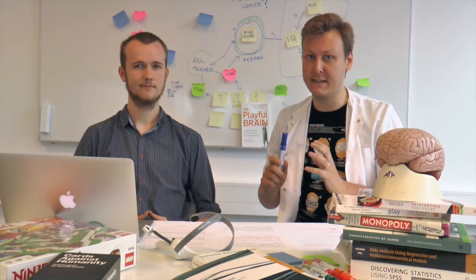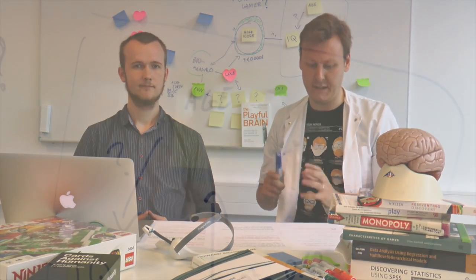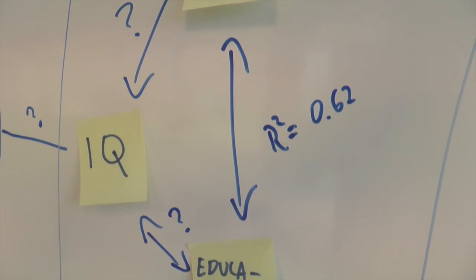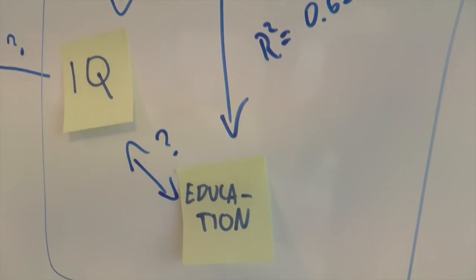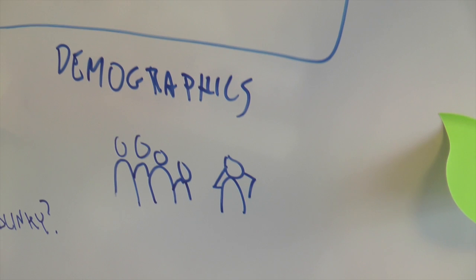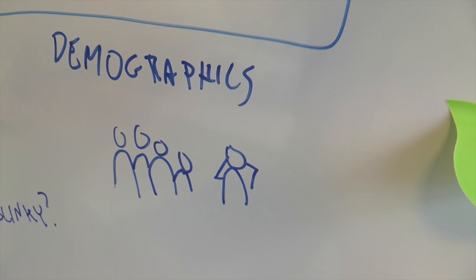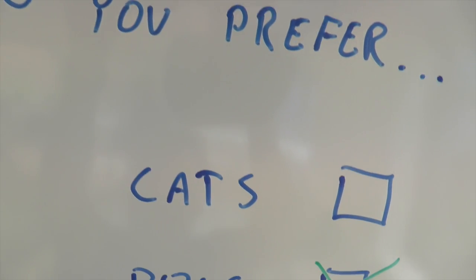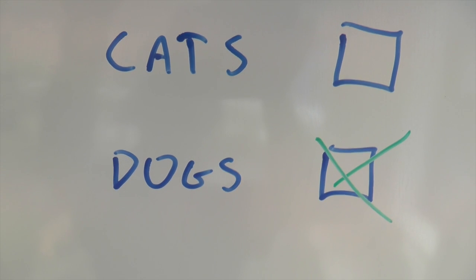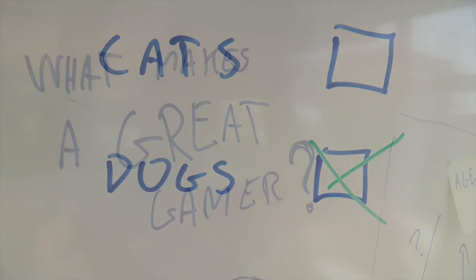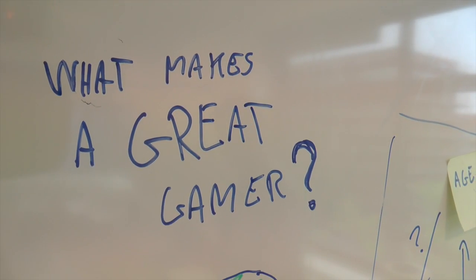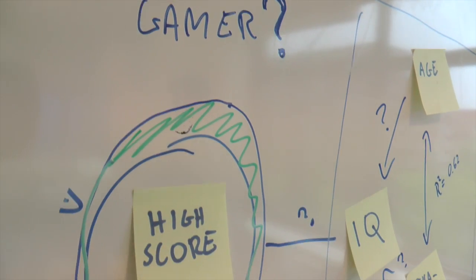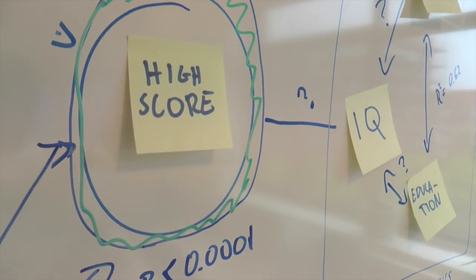Psychologists use statistical tests to figure these things out. First, we get information out in the real world. Then we take those numbers and see how they fit together. We can compare groups, like cat people and dog people, on IQ tests or gaming skills, and look for things that rise and fall together — eating cake and obesity, for example.